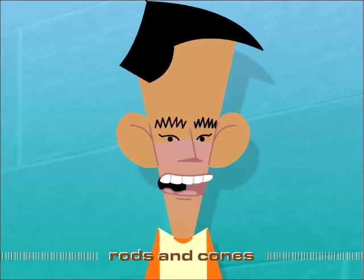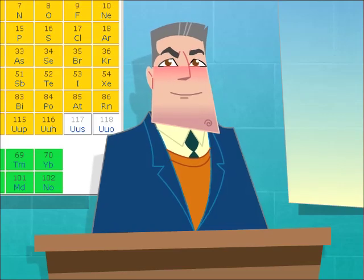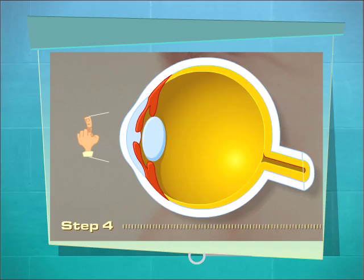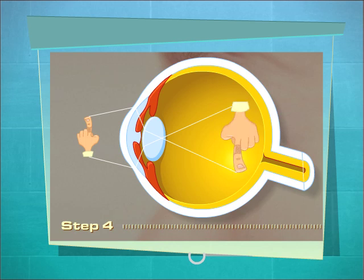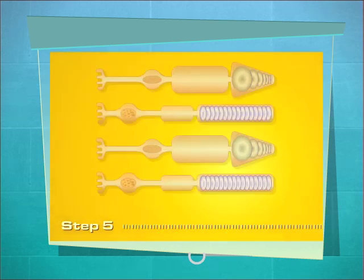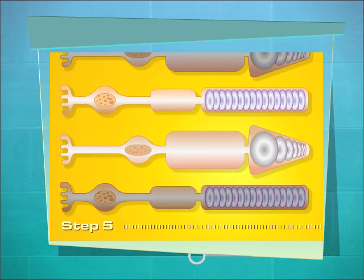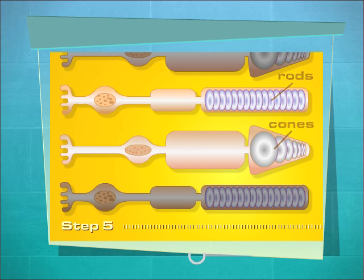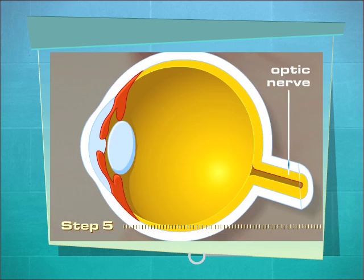Rods and cones are located in the retina. Due to the refraction of light from the cornea and the lens, the image projected on the retina is inverted and reversed from left to right. After passing through several cellular layers, the light reaches the rods and cones, which convert light energy into electrical impulses that eventually reach the optic nerve.